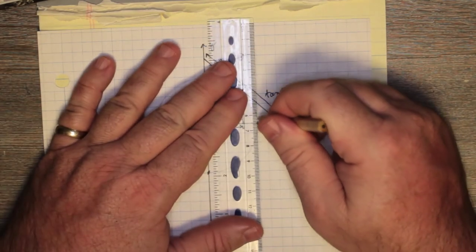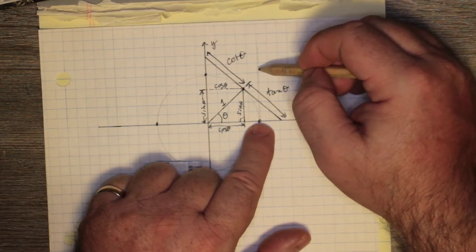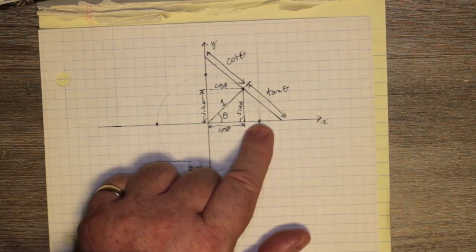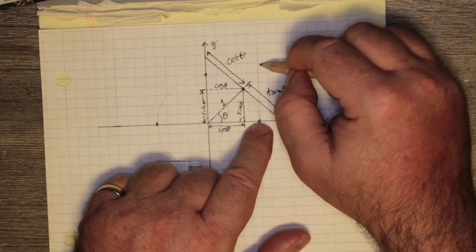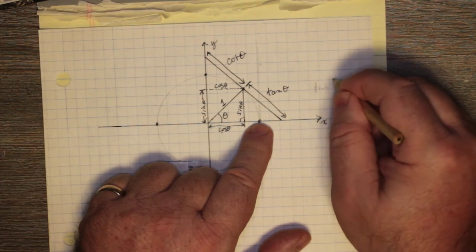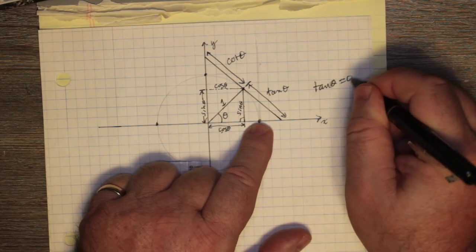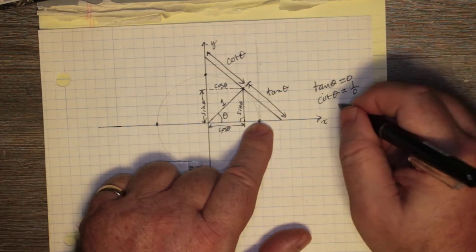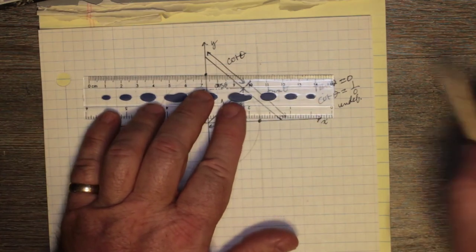At zero degrees, the tangent line is parallel to the y-axis, so the cotangent — the distance to the y-axis — has no point of contact. Parallel lines never meet, so that distance is undefined. If tan theta is zero, then cotangent theta is one over zero, which is undefined.